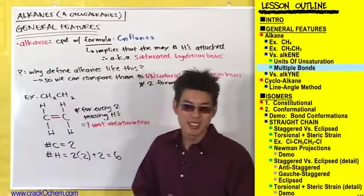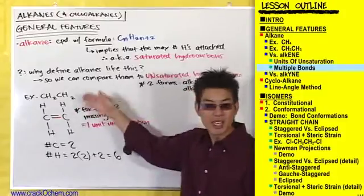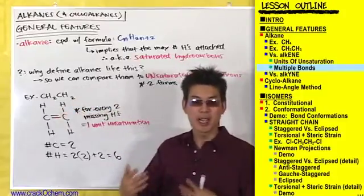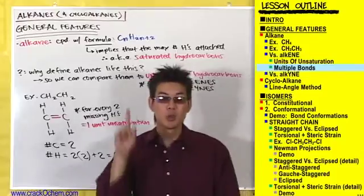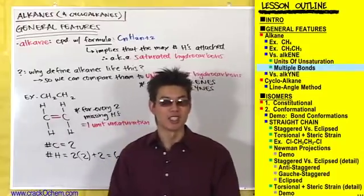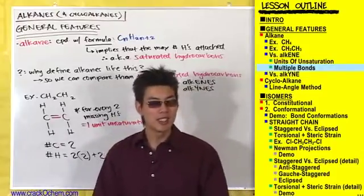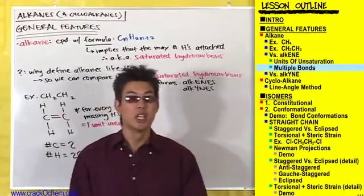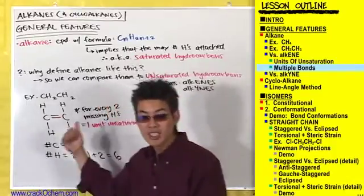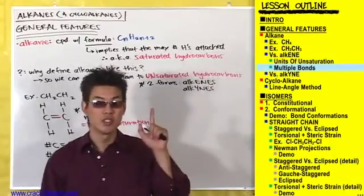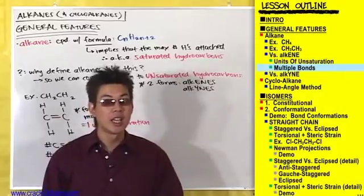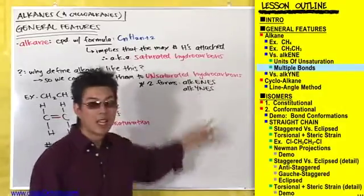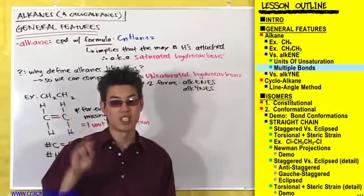You've just seen your very first alkene. An alkene is just a hydrocarbon with 1 unit of unsaturation. An alkane is a hydrocarbon with 0 units of unsaturation. An alkene has 1 unit of unsaturation, and an alkyne has 2 units of unsaturation.